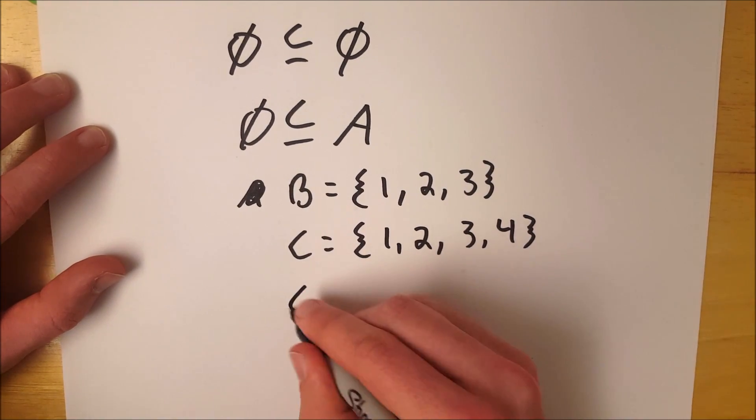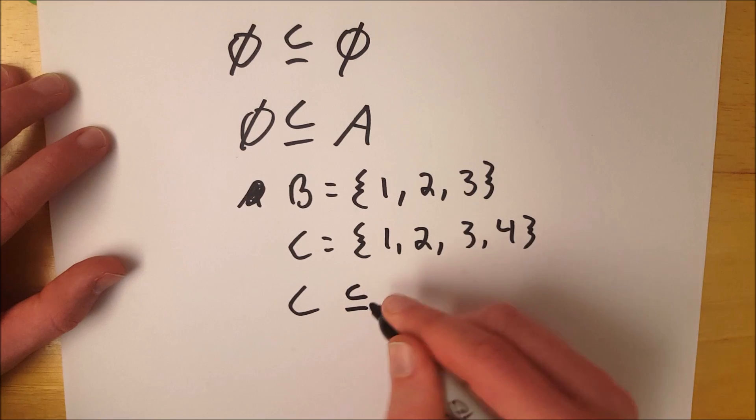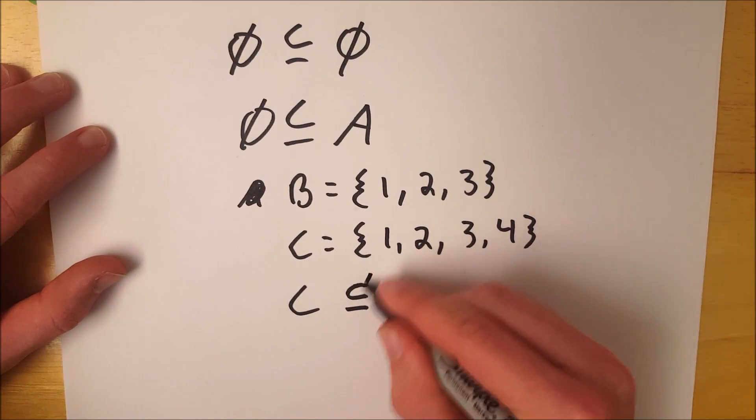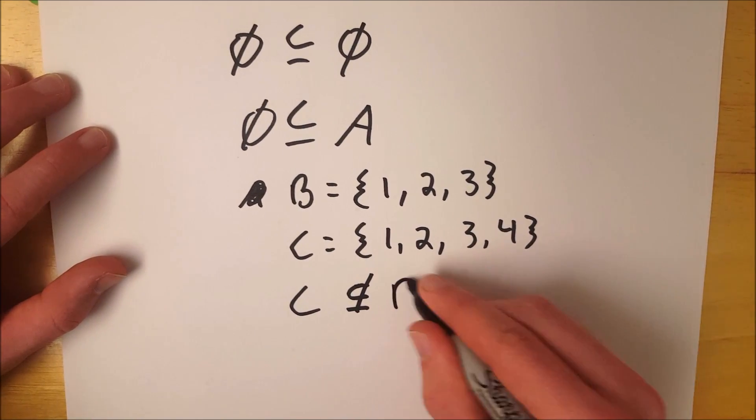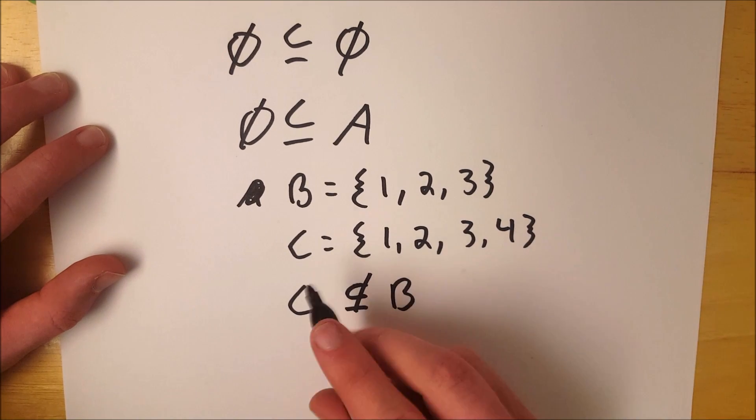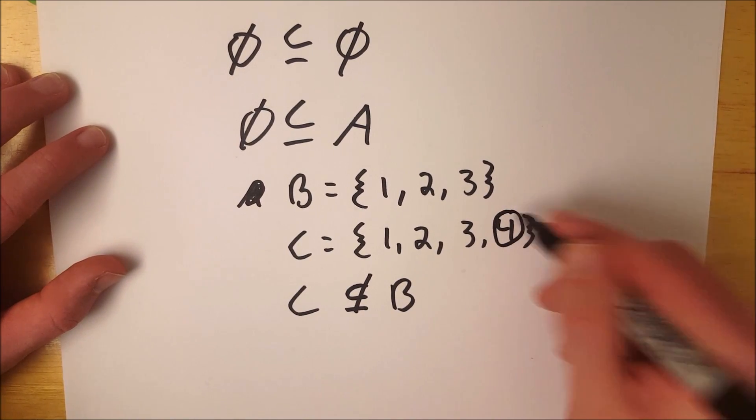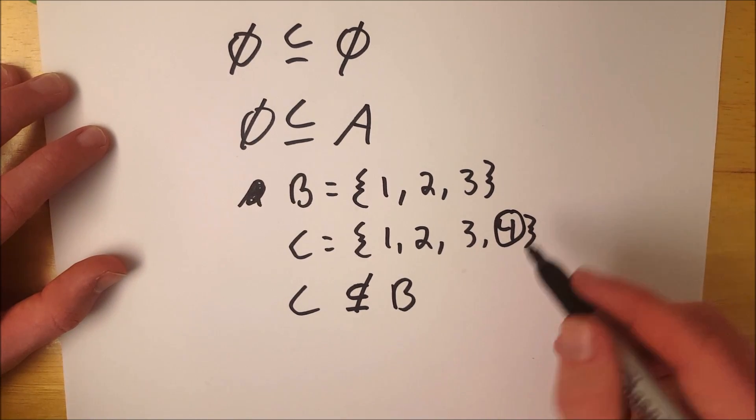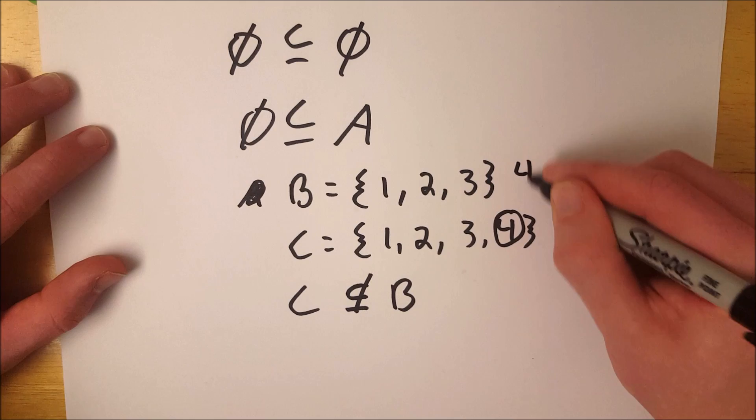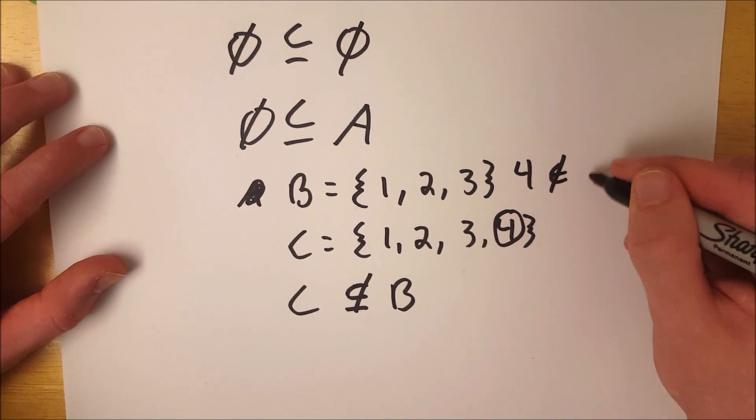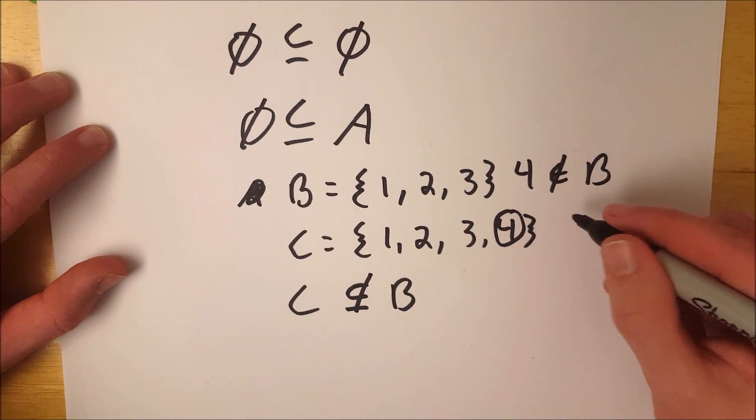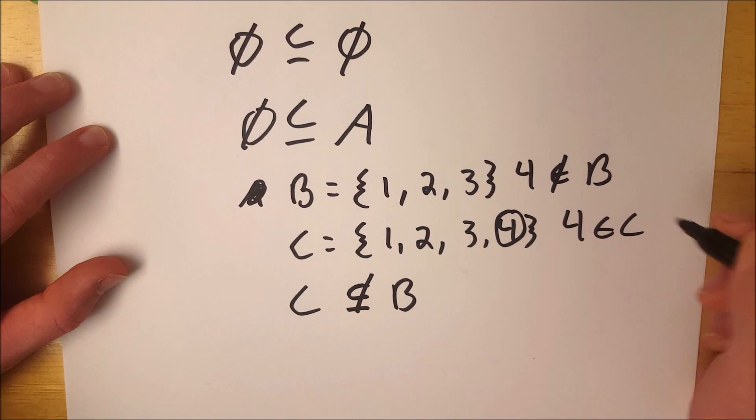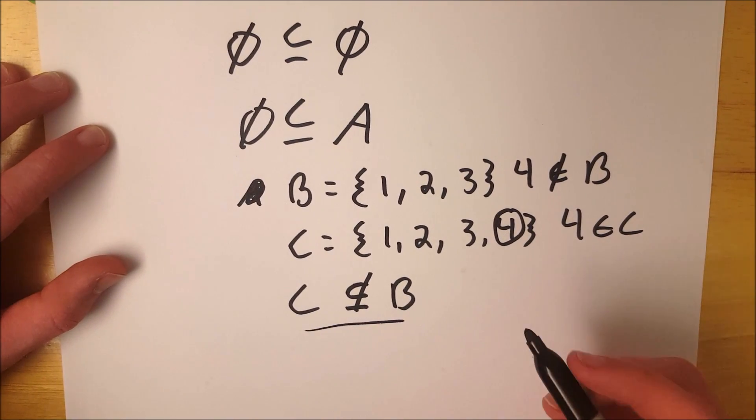However, we know that C is not a subset of set B. And why is that? Because C has an element that is not in B. 4 is not an element of B. And since 4 is an element of C, C cannot be a subset of B.